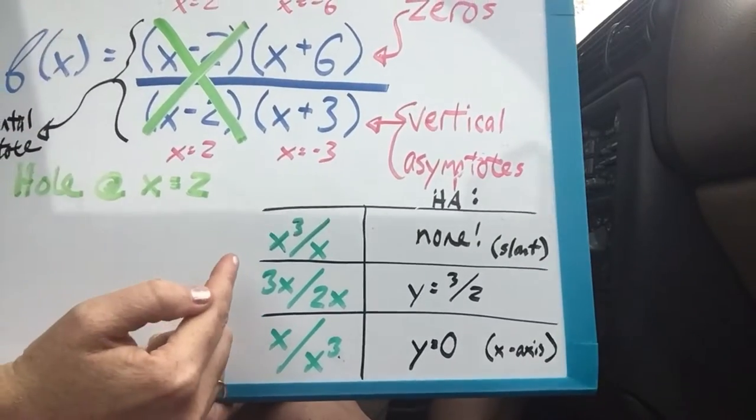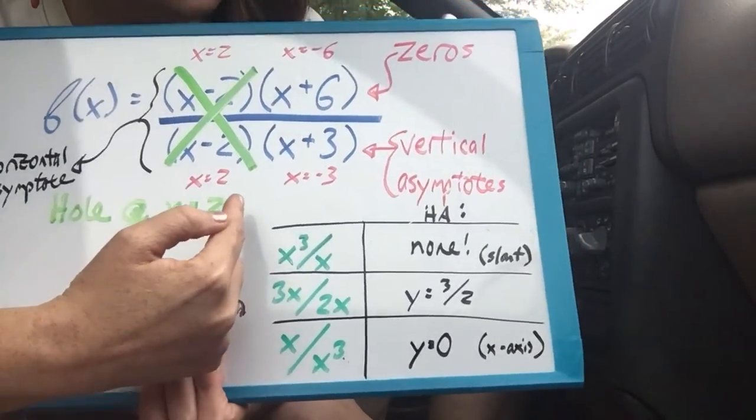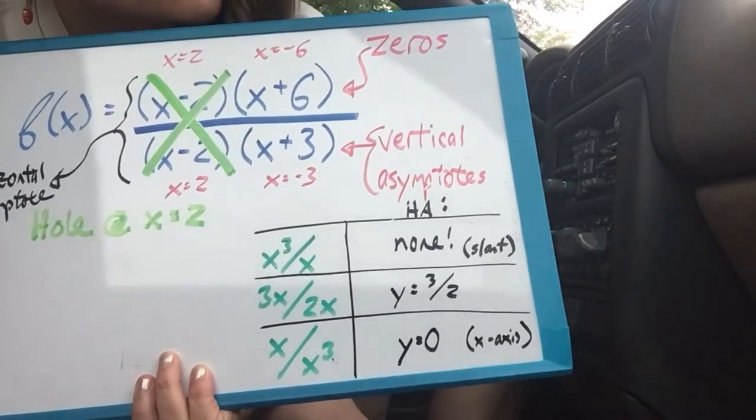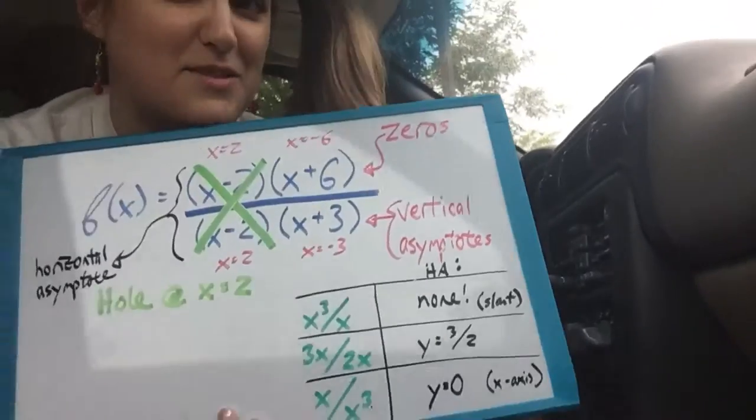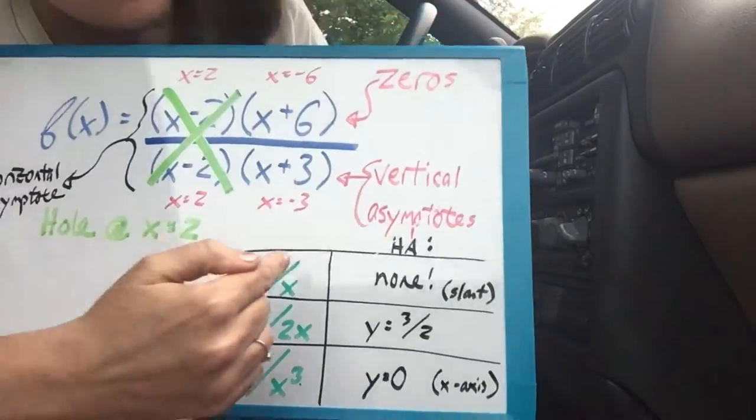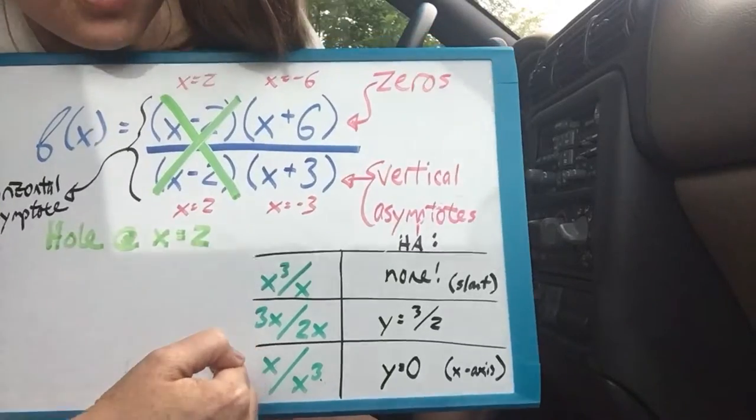So if the degree of the numerator is bigger than the degree of the denominator, then there's no horizontal asymptote. And there might be a slant asymptote, and I'm not going to talk about that in this video. If they are equal, if the degrees are equal, then you have to use the coefficients.